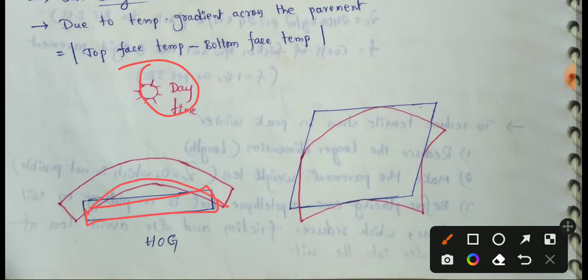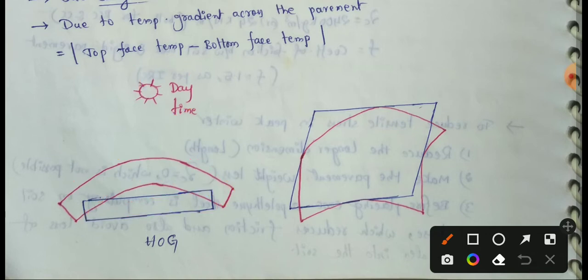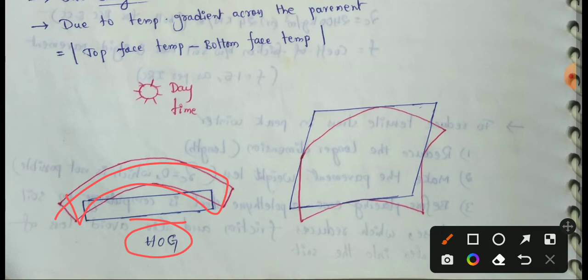The warping stresses should be added to the top face — tensile stresses act on the top face. The actual shape is the Hog shape, which can also be called a cross-section. It can be called Hog.